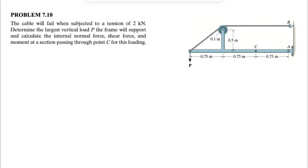Welcome back to the channel. We're going to be solving question 10 from chapter 7 of the Hibbeler textbook Engineering Mechanics. In this one, we have a cable that will fail when subjected to a tension of 2 kN.